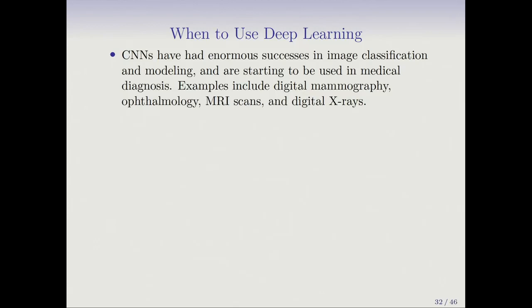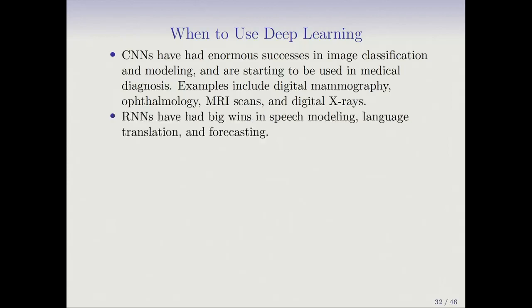We've talked about a number of neural networks: for images, for sequences, and for general data. The question is when to use deep learning. CNNs have had enormous success in image classification and are starting to be used in medical diagnosis — including digital mammography, ophthalmology, MRI scans, and digital x-rays — and we talked briefly about using pre-trained images as feature extractors when you don't have much training data. RNNs have had big wins in speech modeling, language translation, and forecasting. But should we always use deep learning?